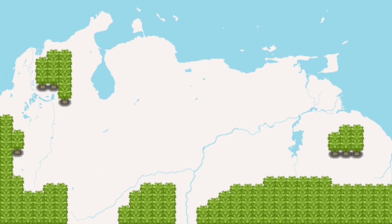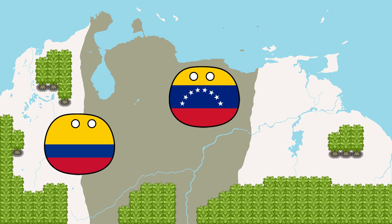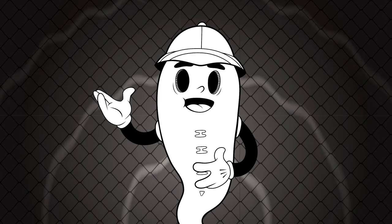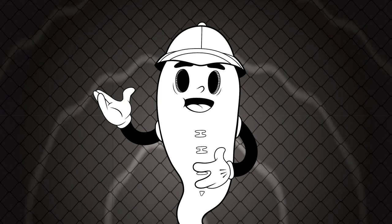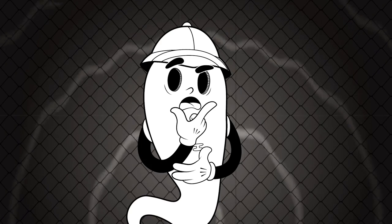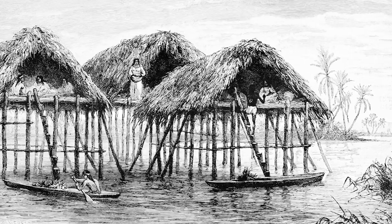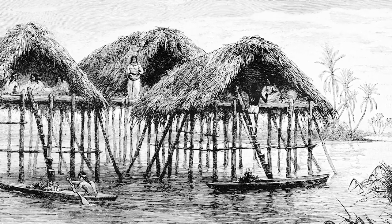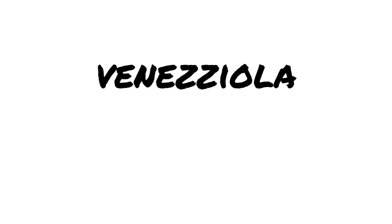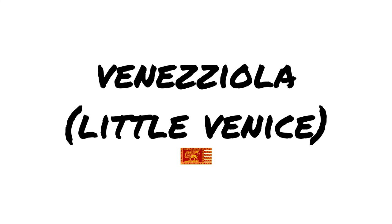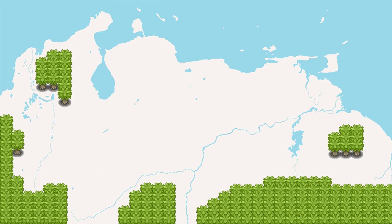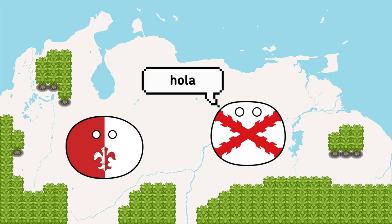Klein Venedig, which literally means Little Venice, was the name of a colony in what is nowadays Colombia and Venezuela. Venezuela itself got its name from Venice too. Early explorers, among them Christopher Columbus, found the region's inhabitants living in stilt houses on lakes, and since it reminded them of Venice, they called it Veneziola, which in Italian meant something like Little Venice. This name was later applied to the German colony, and under Spanish control it would transform into Venezuela.